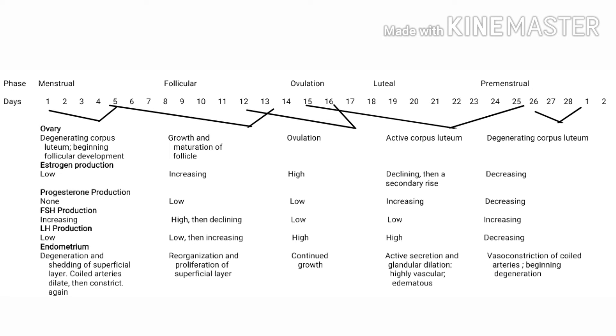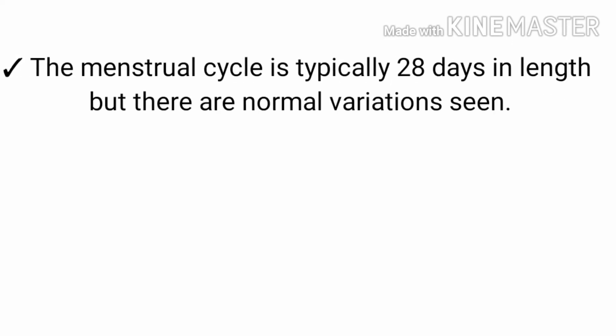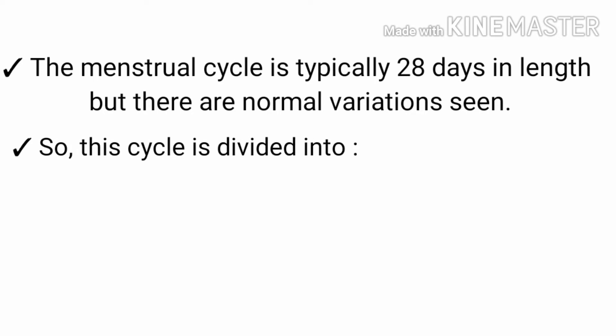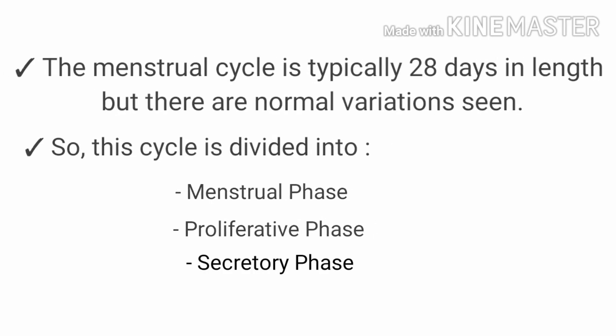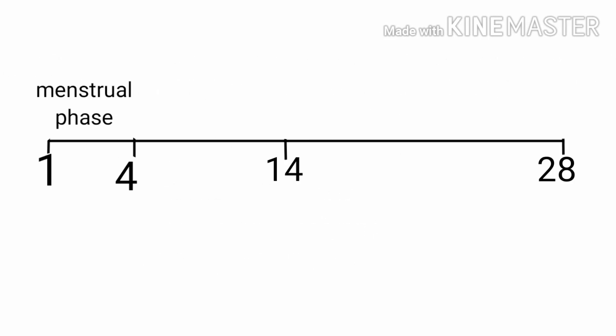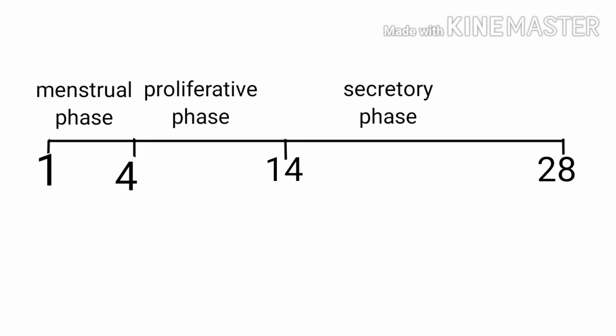Here are some hormonal changes described in this figure. Now we will see the menstrual cycle according to its phases. The menstrual cycle is typically 28 days in length, but normal variations are seen. This cycle is divided into three phases: menstrual phase, proliferative phase, and secretory phase. The menstrual phase usually lasts about four days, the proliferative phase lasts about 10 days, and the secretory phase about 14 days.